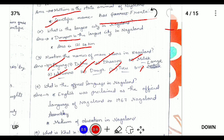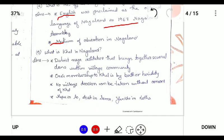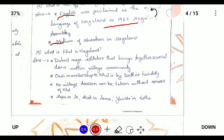What is the official language in Nagaland? The official language is English, which has been used as an official language since 1967 and it is also a medium of instruction in Nagaland.